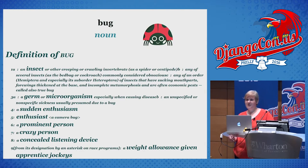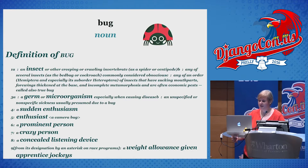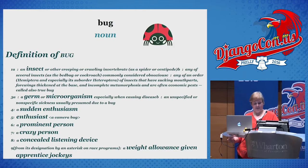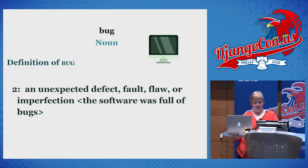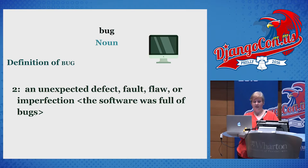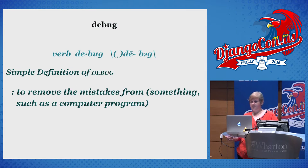I'm an English major, so I love dictionaries and definitions. Let's take a look at what a bug actually is. When you type 'bug' into the Merriam-Webster dictionary, you get all of these wonderful definitions — an insect or a germ, an enthusiastic or crazy person, a concealed listening device, a weight allowance for jockeys. But the one we're interested in is this: a bug is a defect, fault, flaw, or imperfection — in other words, something that causes your code not to work.